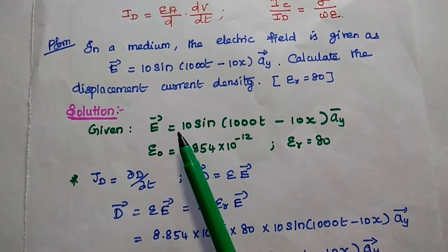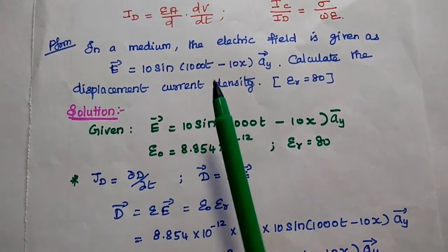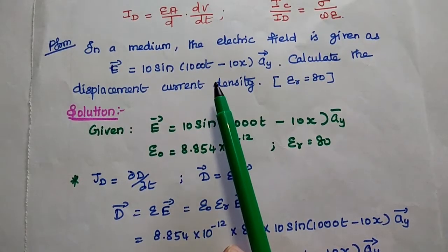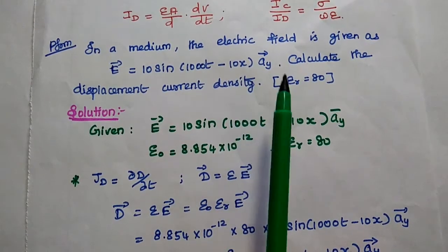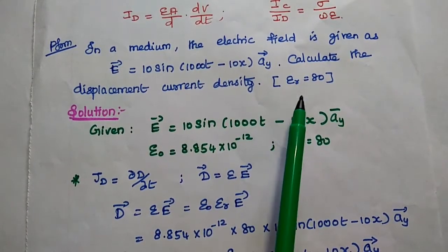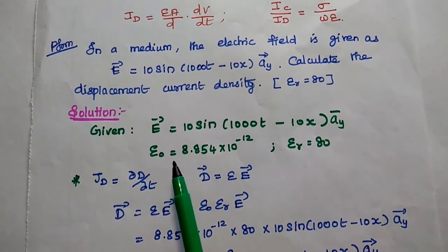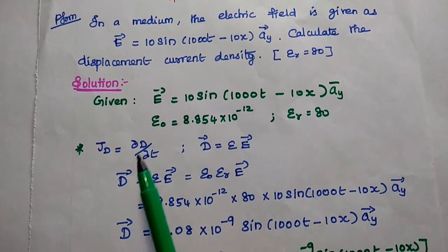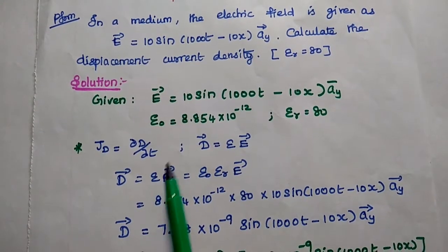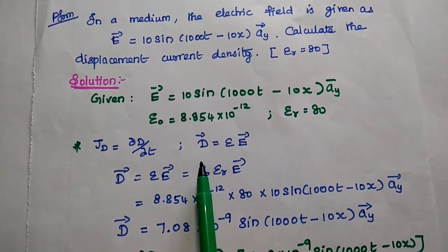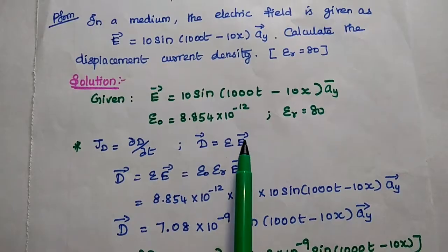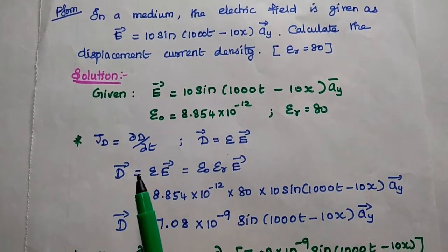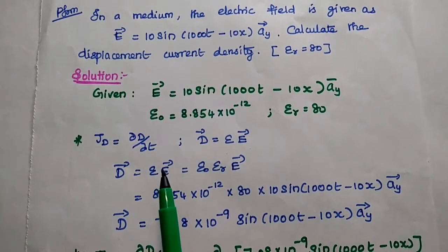In the solution part, first we write the given data: the electric field intensity and the relative permittivity. We are going to use the formula JD = ∂D/∂T. This D is nothing but epsilon times E. So first we find the D value, then we differentiate D with respect to T.